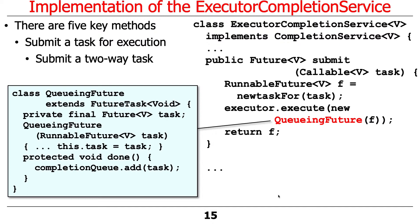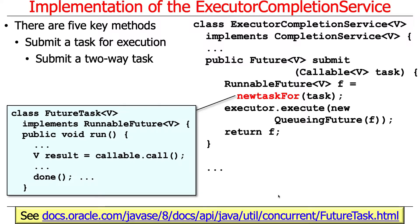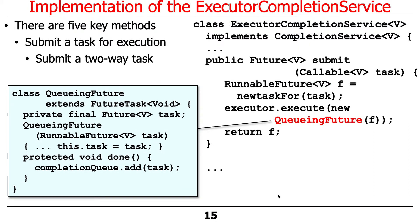These are just layers of adapters whose only purpose is to take this callable, create a FutureTask, wrap that FutureTask in a QueueingFuture, and execute the QueueingFuture. Its run method calls the callable's call method, which then calls the done hook method. The done hook method enqueues the result onto the completion queue. A rather circuitous route, but that's the way it works.